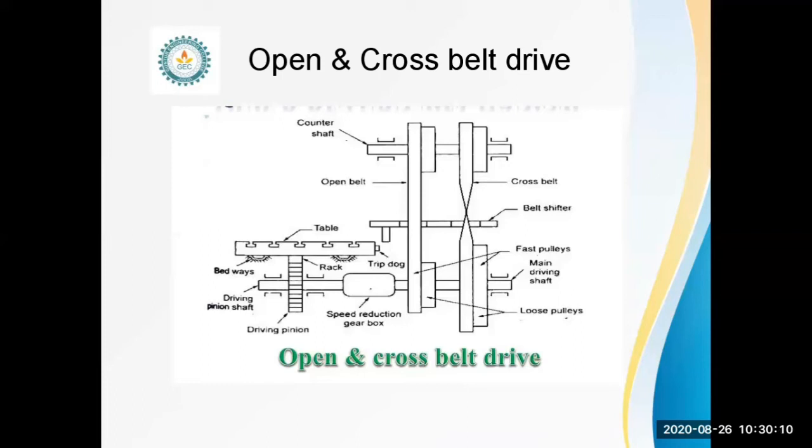A crossed belt is used to drive the table during the cutting stroke. At the end of the cutting stroke, the crossed belt from the fast pulley is shifted onto the loose pulley, while the open belt is shifted from the loose pulley to the fast pulley. In this open and cross belt drive mechanism.